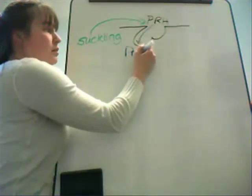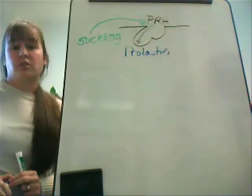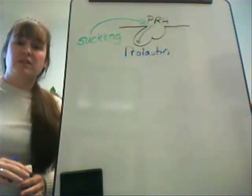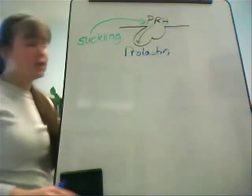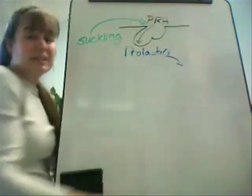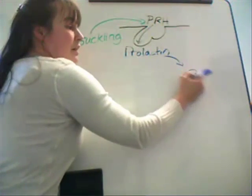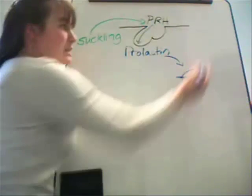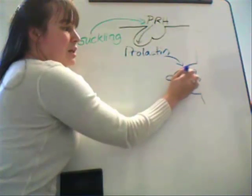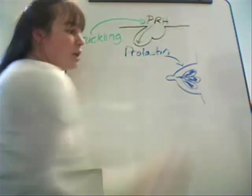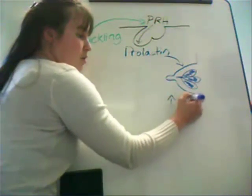Prolactin is released from the anterior pituitary into circulation, where it has an effect on two tissues — meaning there are receptors embedded in two tissues capable of responding to prolactin when it adheres to the receptor. The first, which you are probably already anticipating, is the mammary glands. The prolactin is stimulating the glands inside the breast tissue to increase their production of milk, with the net result being increased milk production.